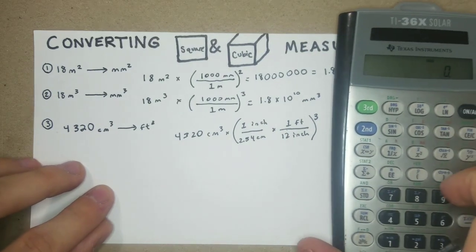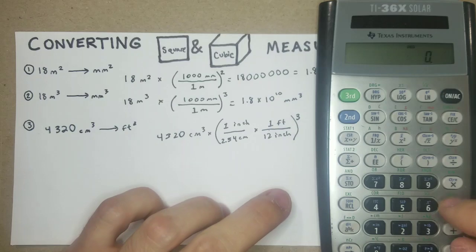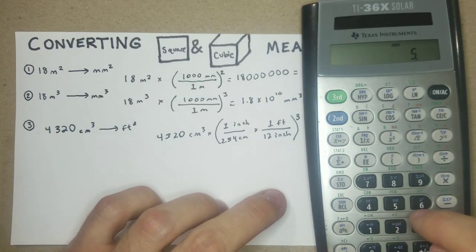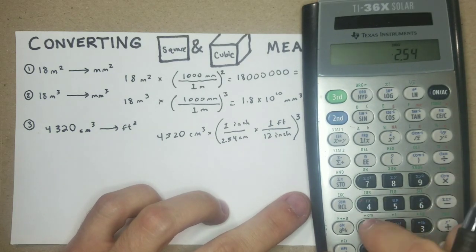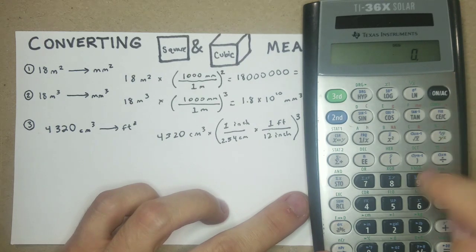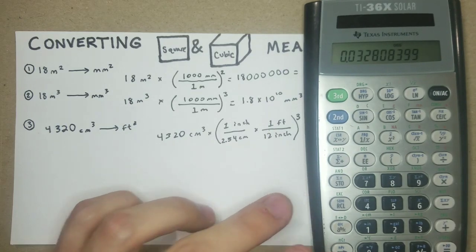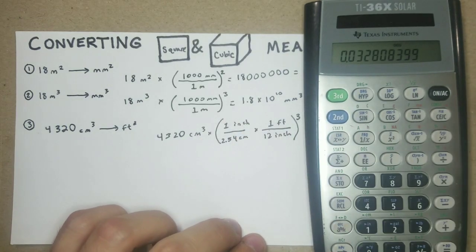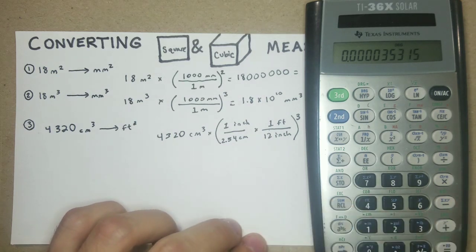So another easy way to do this type of calculation, at least I found on my calculator, is I take the 2.54 times 12. So I'm figuring out what's on the bottom, that's 30.48. Now I'm just going to do 1 divided by 30.48. So that's this whole fraction. Now I'm going to cube that. So I think on this one it's Y X 3.